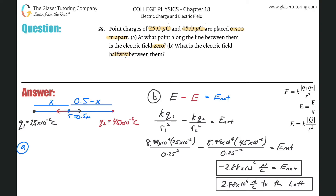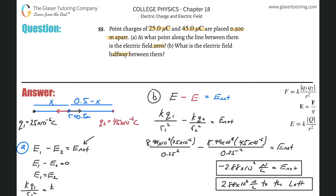The same setup from letter B still applies. The electric field at the unknown point produced by the first charge, minus the electric field produced by the second charge, equals the net electric field at that point. The difference here is that the net electric field equals zero — that's what they told us. So E₁ minus E₂ = 0, meaning E₁ = E₂. Expanding: kQ₁/r₁² = kQ₂/r₂², and the k's cancel, giving Q₁/r₁² = Q₂/r₂².